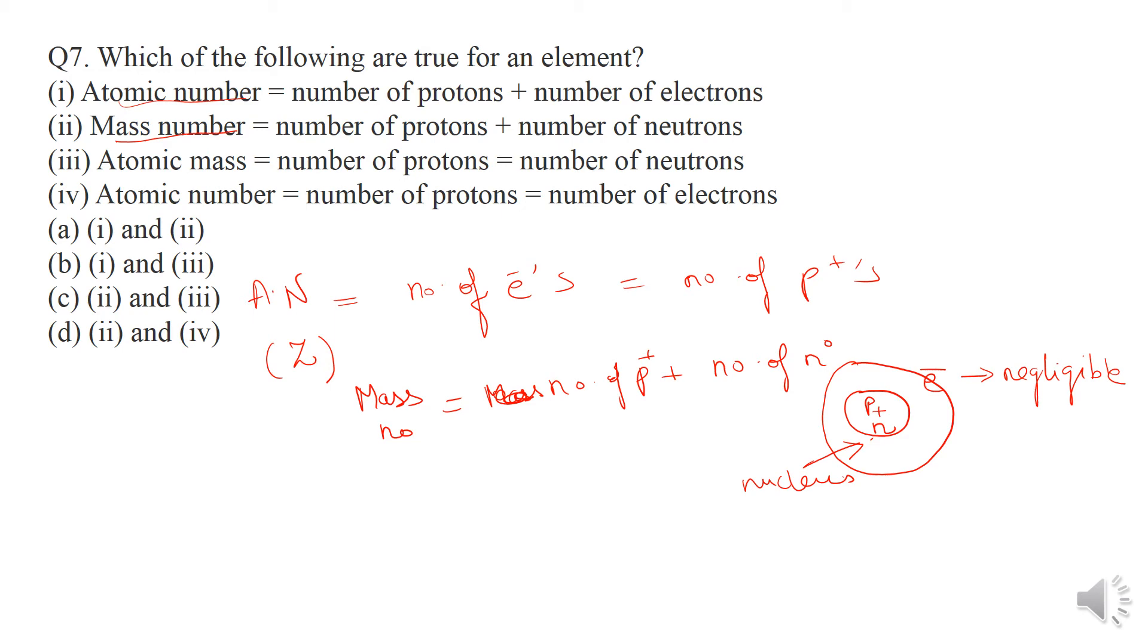Now let's see which options match. Atomic number is number of protons plus number of electrons - this first option is incorrect. Mass number is number of protons plus number of neutrons - this is correct. Atomic number is number of protons and neutrons - this is also incorrect. Atomic number equals number of protons equals number of electrons - this is the correct answer.